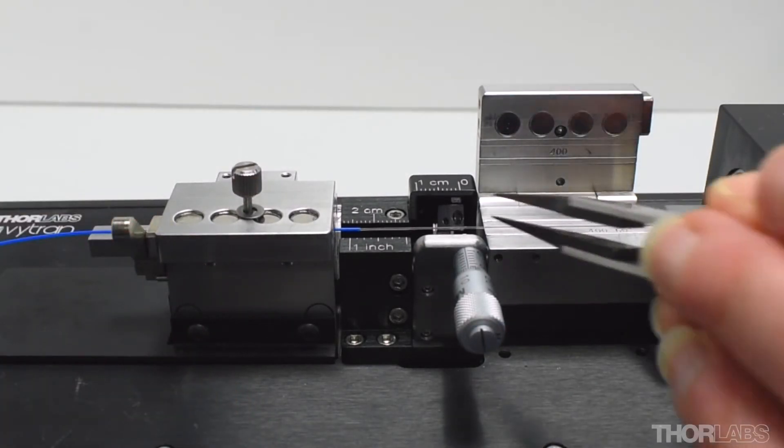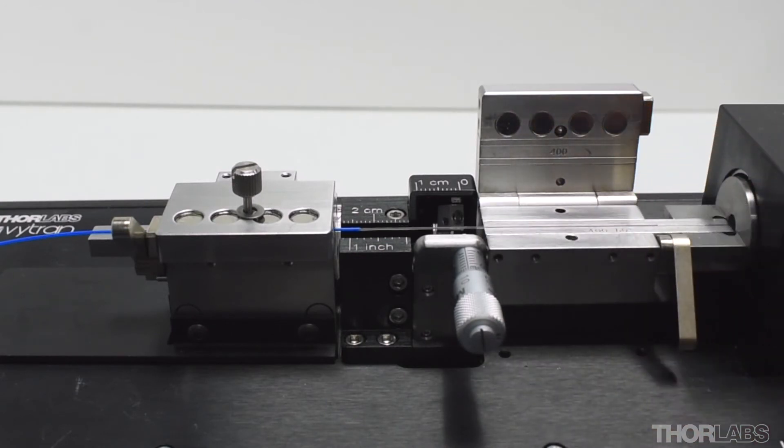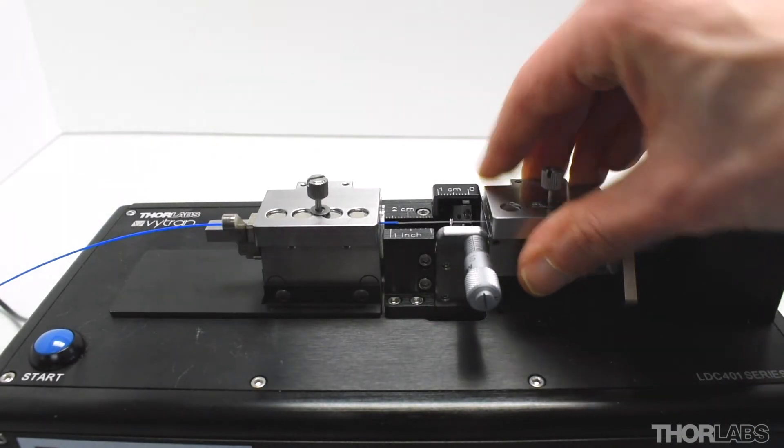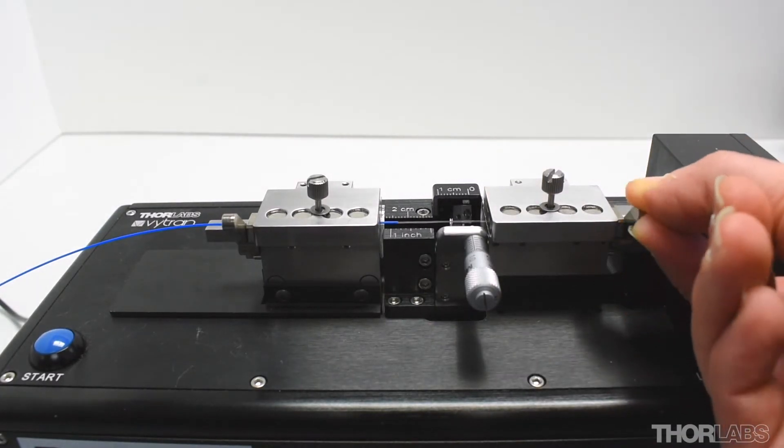Before closing the right lid, use soft tip tweezers to lift the fiber out of the right insert and allow the vacuum to draw it back into the V-groove. This will release any unwanted torsion caused as the fiber was loaded. Now lower the right lid and gently lift the cam lever to fully close it.